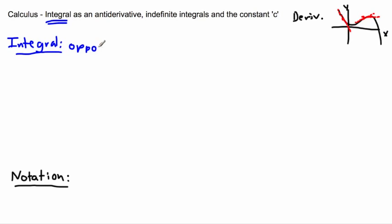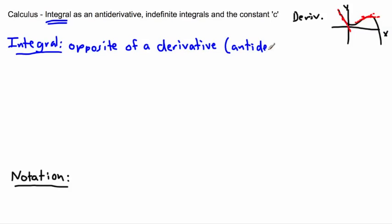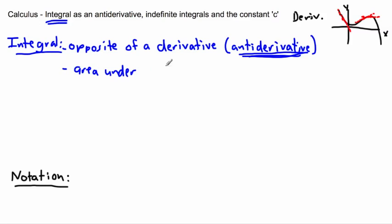When I say it's the opposite of a derivative, I mean you can literally take a function, see what its derivative is, and work backwards. We use the word anti-derivative for this. So an integral is the anti-derivative. Another important thing: remember how derivatives are about finding the slope of a tangent? Well, the integral is mainly about finding the area under a curve. Sometimes we're given a derivative of a function and we want to know the original function — then we use this.